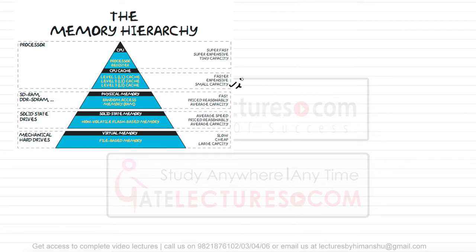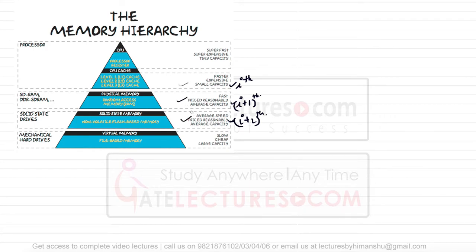Assuming this is the i-th level, then this will be the (i+1)-th level of the memory hierarchy, this will be the (i+2)-th level, and so on. We are not specifically discussing L1, L2, L3, L4 cache by name — in this video, when I say L1 I mean the first level, L2 means the second level, L3 means the third level, and so on.